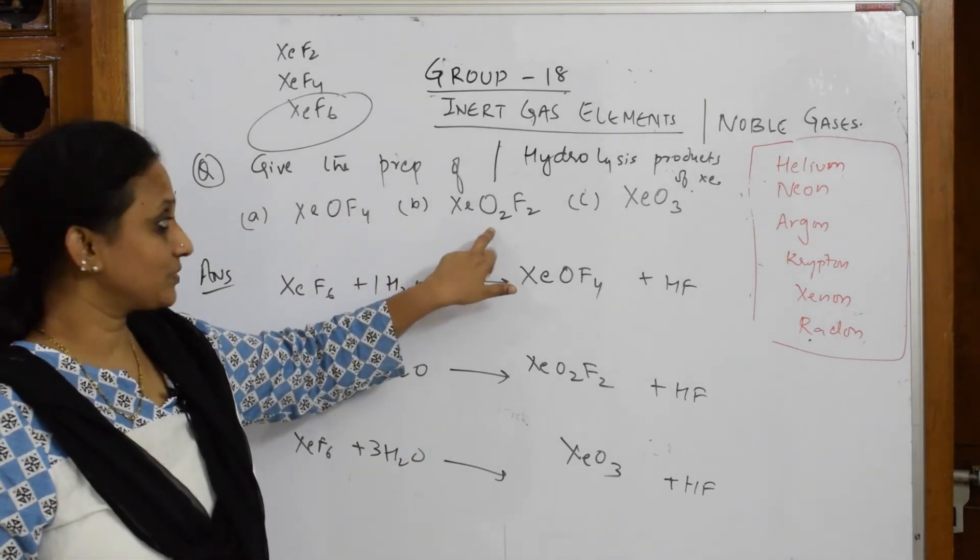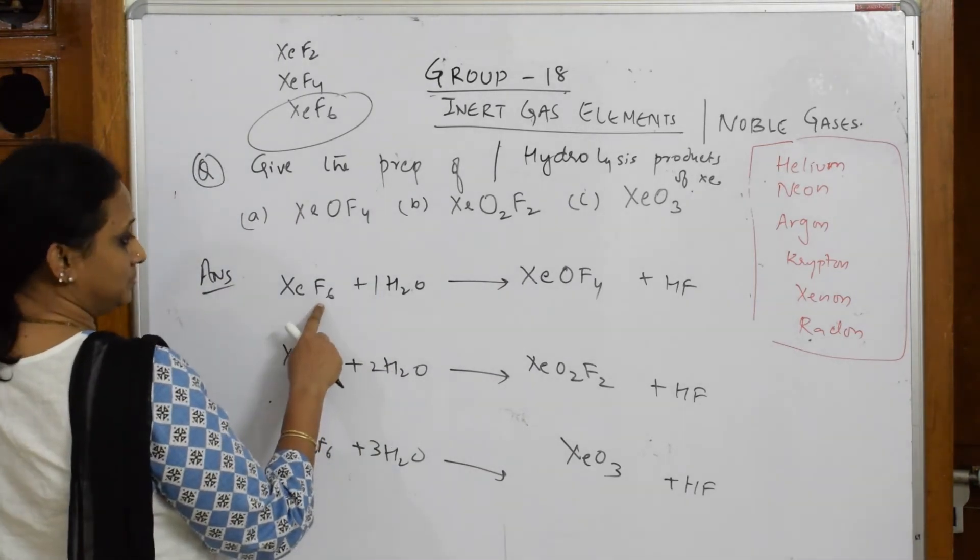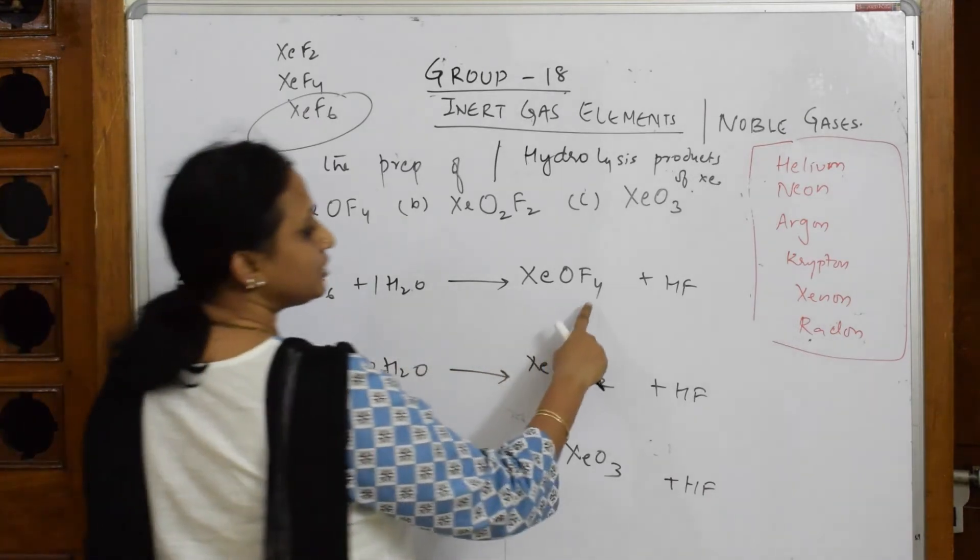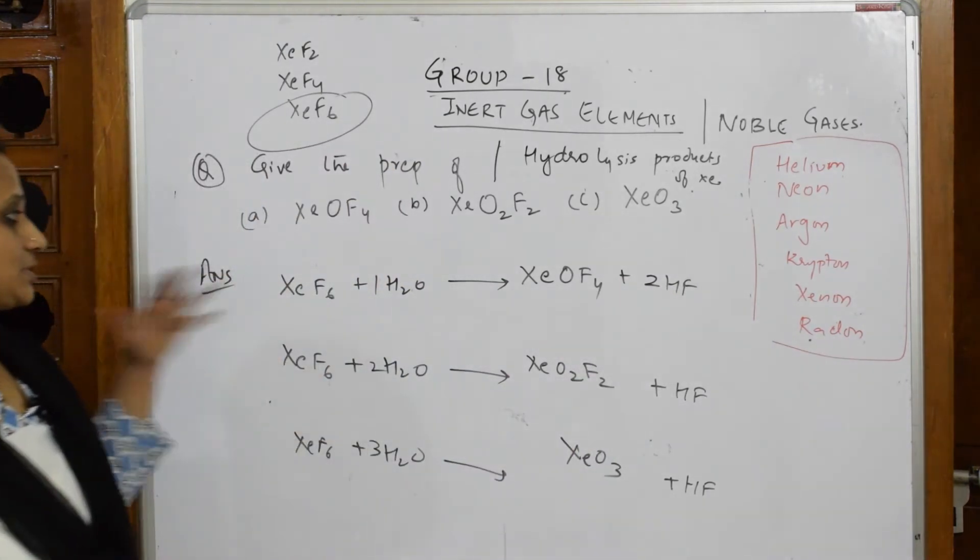When you take one water molecule, you get XeOF4. Two water molecules give this one, three water molecules give this. HF is not balanced. Let's balance: there are six fluorines, but here already four fluorines, so write this as 2HF.